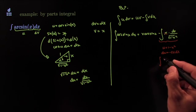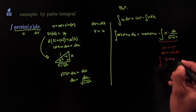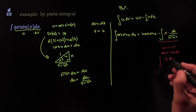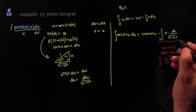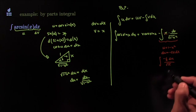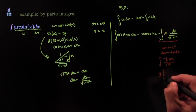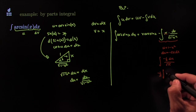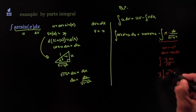Solving here, it'd be negative 1 half du. And then on the bottom, I'd have square root of 1 minus x squared, so it'd be the square root of u. So that would be negative 1 half integral of u to the negative 1 half du.